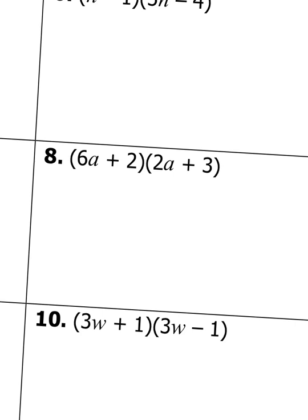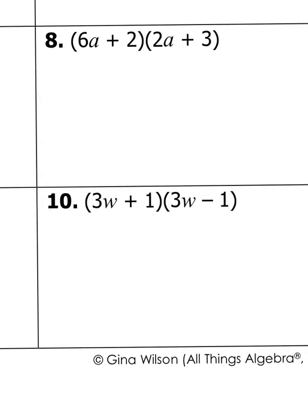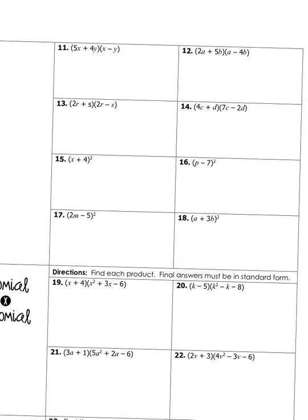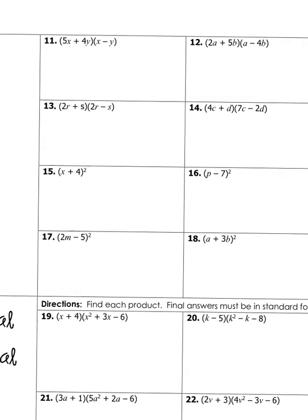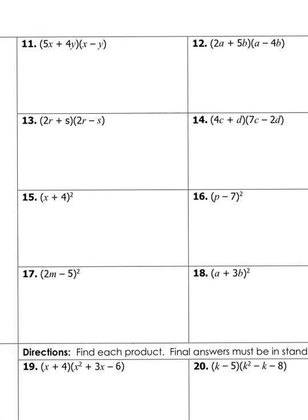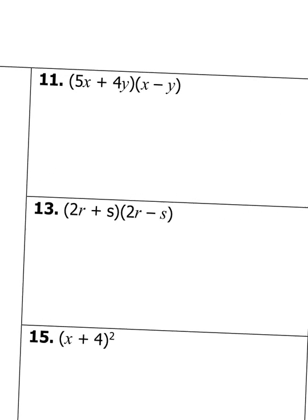Go ahead and try number 8 on your own, and also try number 10 on your own. Now we're going to flip it over to the back. These have two sets of letters — two variables — but you're going to do the exact same thing.